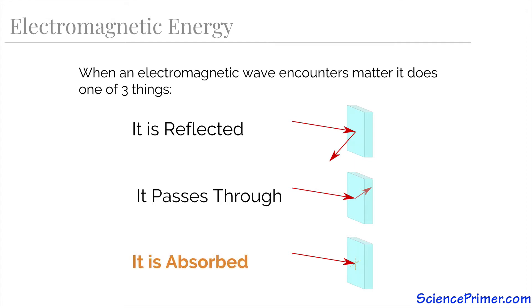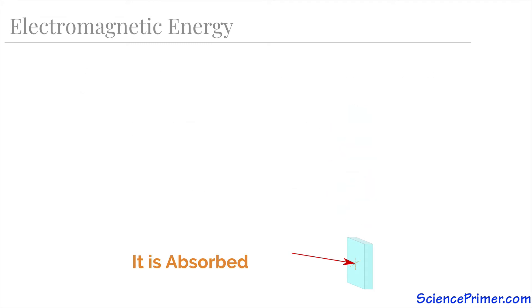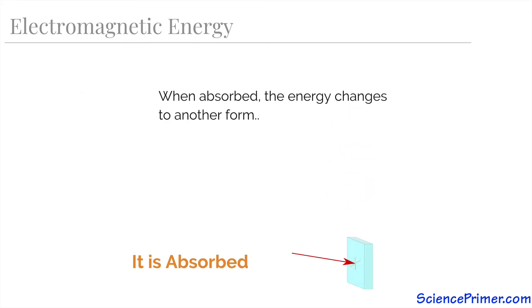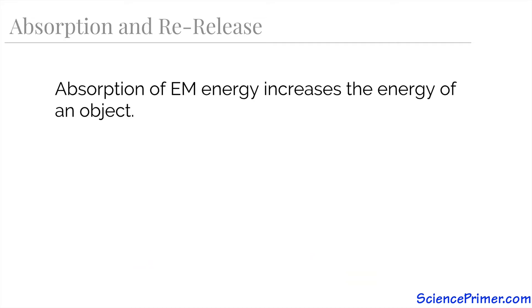It is through absorption that energy contained in the wave is transferred to the matter that absorbs it. When it is absorbed by matter, the energy changes and that particular electromagnetic energy ceases to exist. Since energy cannot be created or destroyed, absorption of electromagnetic energy must increase the energy of the object. This is typically an increase in temperature for non-ionizing radiation, or altering the arrangement of electrons for ionizing radiation.